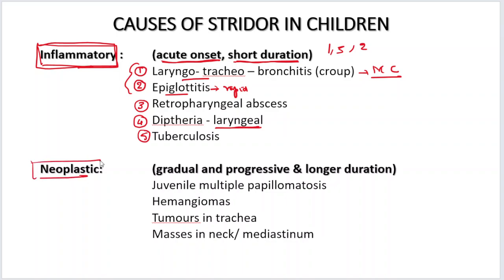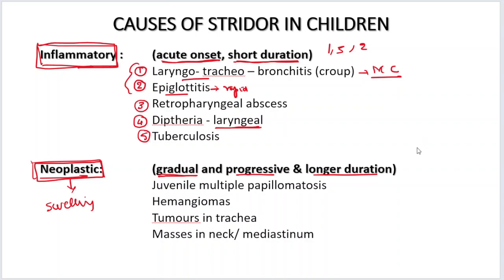Coming to neoplastic causes of Strider — neoplastic means there is a growth occurring, which can be benign or malignant. Most cases in a child are expected to be benign. The onset will be gradual — a slowly progressive kind of disease of longer duration. The child may have had noisy breathing for a few days or weeks and now it has progressed rapidly after the onset of a cold or acute rhinitis.